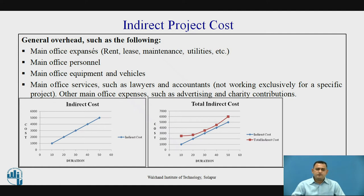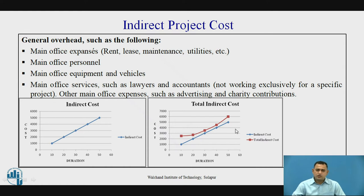When we observe this particular graph, the direct cost is a linear graph. When we sum the overhead cost plus outage cost, we get the total indirect cost as shown in the second graph. When we add the outage cost with the overhead cost, we get the total indirect cost which is in curve form, but most probably it is considered as linear only.